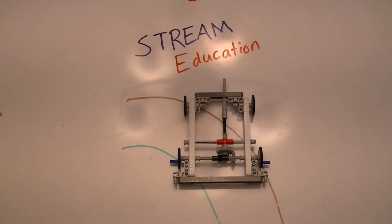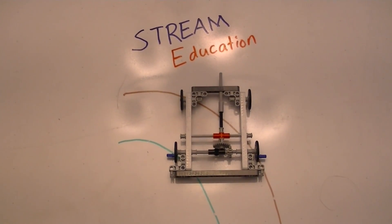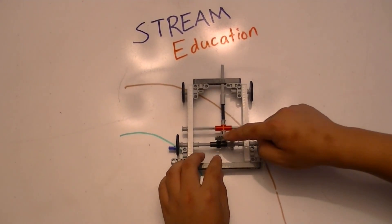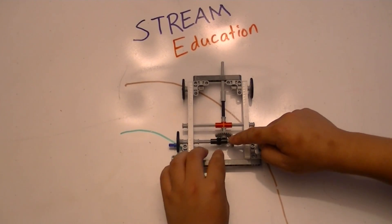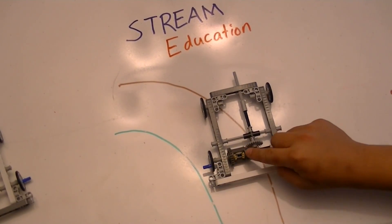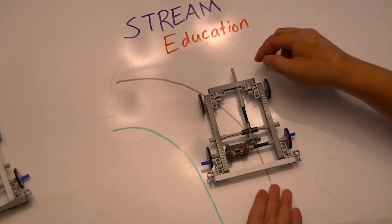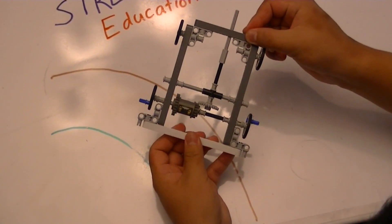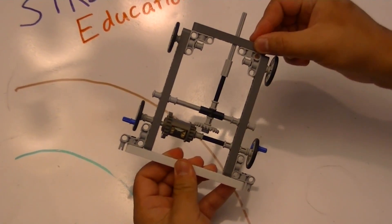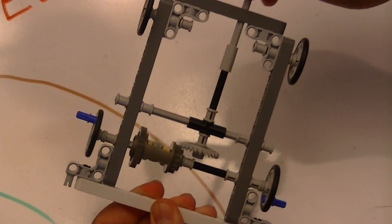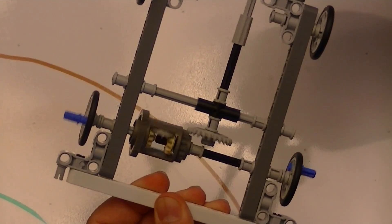This is where the differential gear plays a big role. Let's try replacing this crown gear and gear setup with a crown gear and differential setup. Now, just like the other setup, if I spin this differential, both wheels will spin.